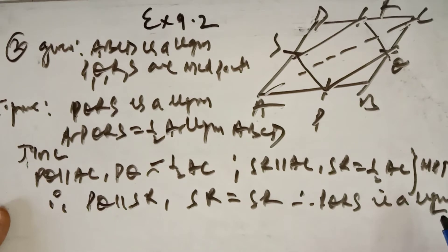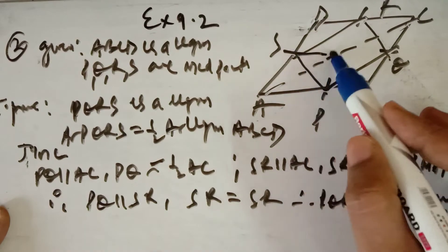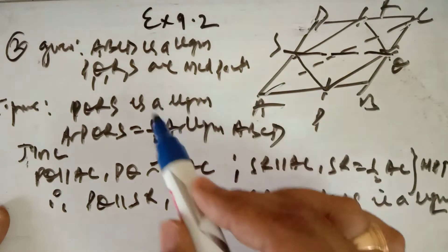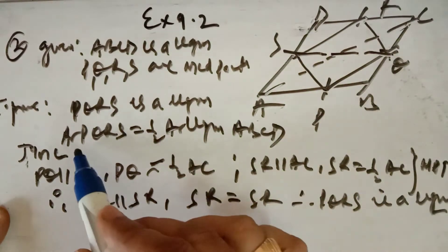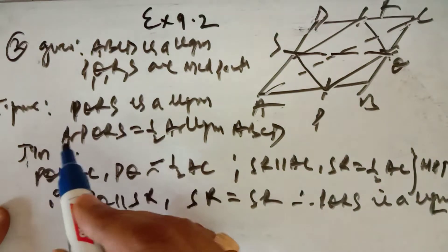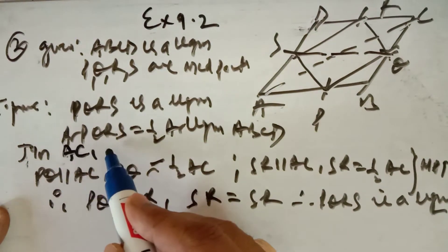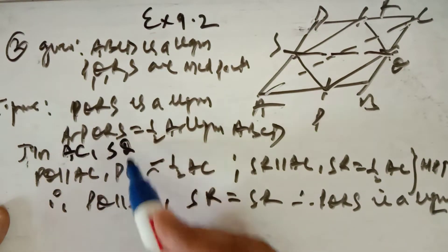Now I will prove that the area of PQRS is half the area of the parallelogram ABCD. Join SQ and also join AC. Now see it very carefully.